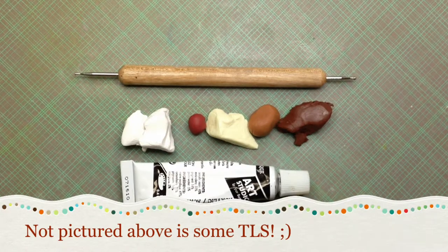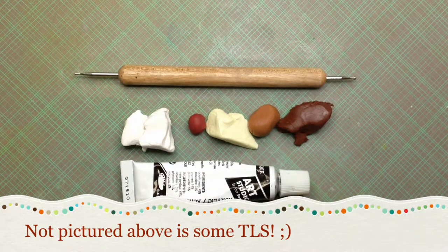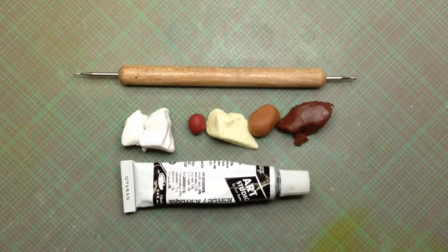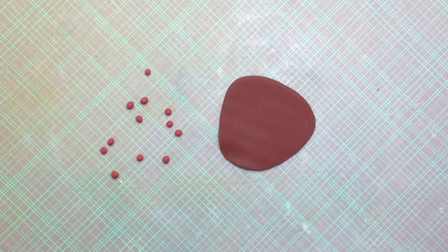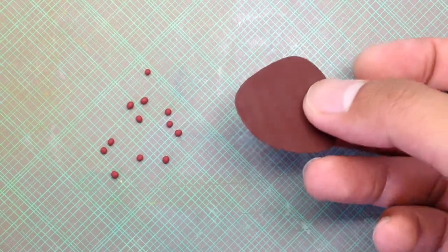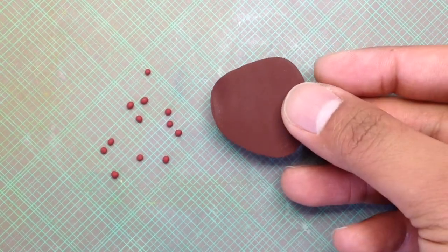The materials are shown here. Start by making small cherries and flattening the brown clay for the chocolate. Bake them for five minutes.